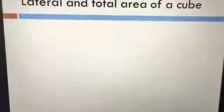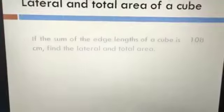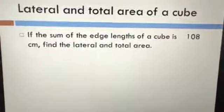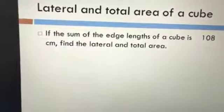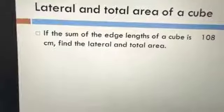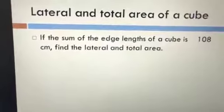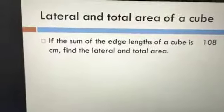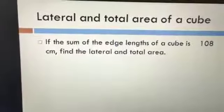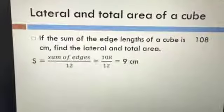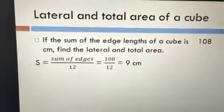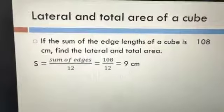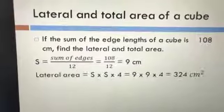Next question: if we have the sum of edge lengths equal to 108 centimeters and want to get the lateral and total area. We use sum of edges divided by 12 to get the edge length: side equals 108 divided by 12, equals 9 centimeters. Then we calculate the lateral area using side times side times four.